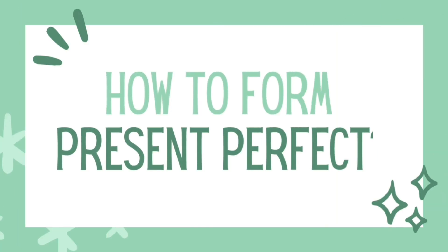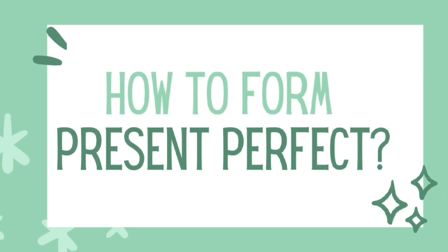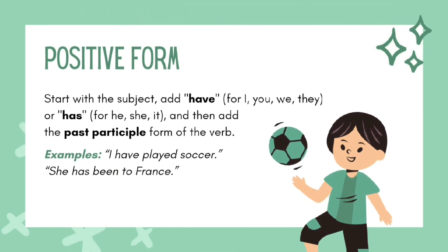How to use present perfect tense? Positive form: To make a positive sentence, start with the subject, add have for I, you, we, they or has for he, she, it, and then add the past participle form of the verb. Examples: I have played soccer. She has been to France.